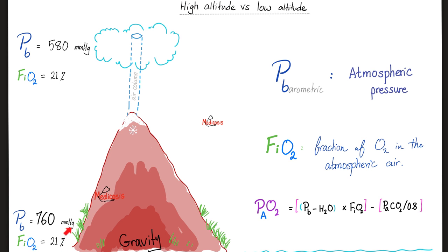What happened when Medicosis was standing at sea level versus on top of a mountain? At sea level, there's 760 millimeters of mercury atmospheric pressure. On top of a mountain, the atmospheric pressure went down, say 580 for example. But when I was down here, oxygen constituted 21% of the atmospheric air and this did not change when I went on top of a mountain. This is very important. FiO2 does not change, whether you're here or here, doesn't matter.